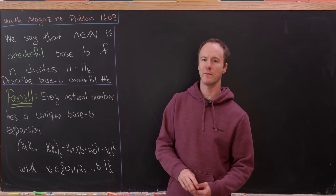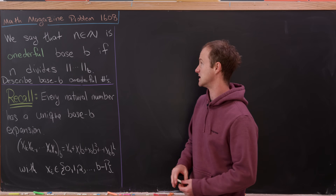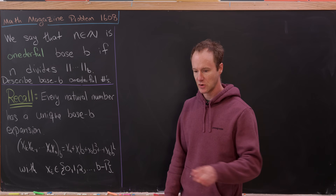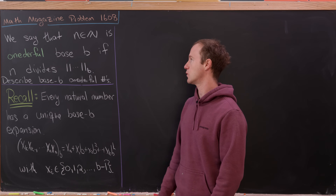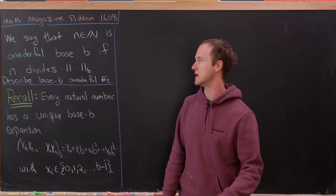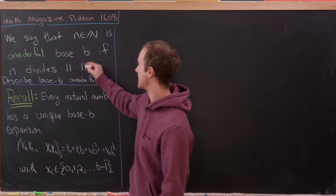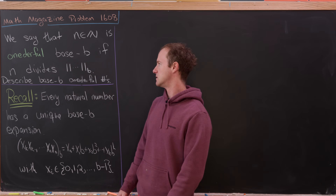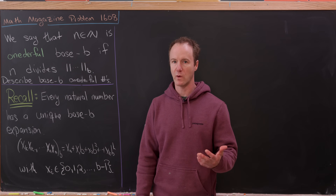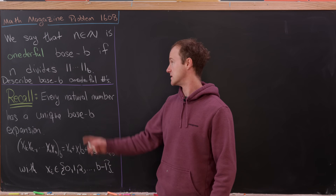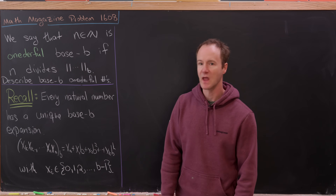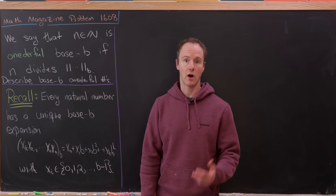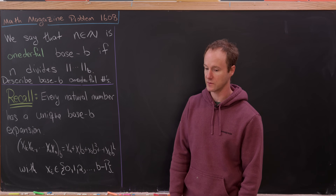Today we've got a nice problem from the Math Magazine — this is problem 1608. It starts with a definition: we say that a natural number n is wonderful base b if n divides a number that is just a bunch of ones in base b. Our goal is to describe what the base-b wonderful numbers are.